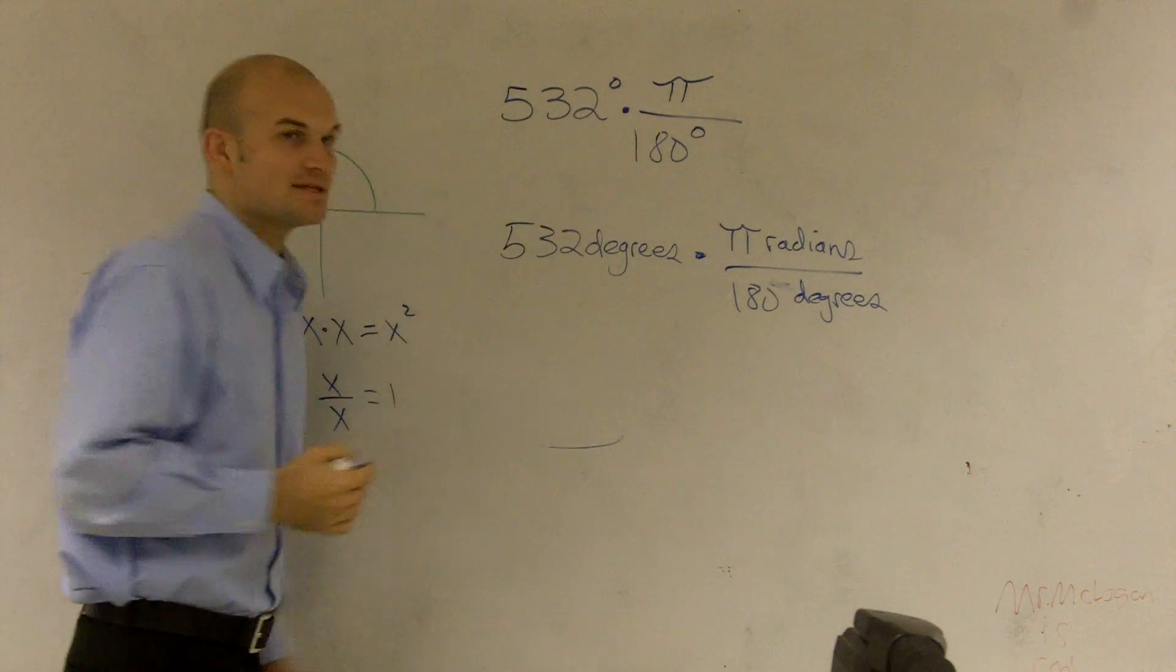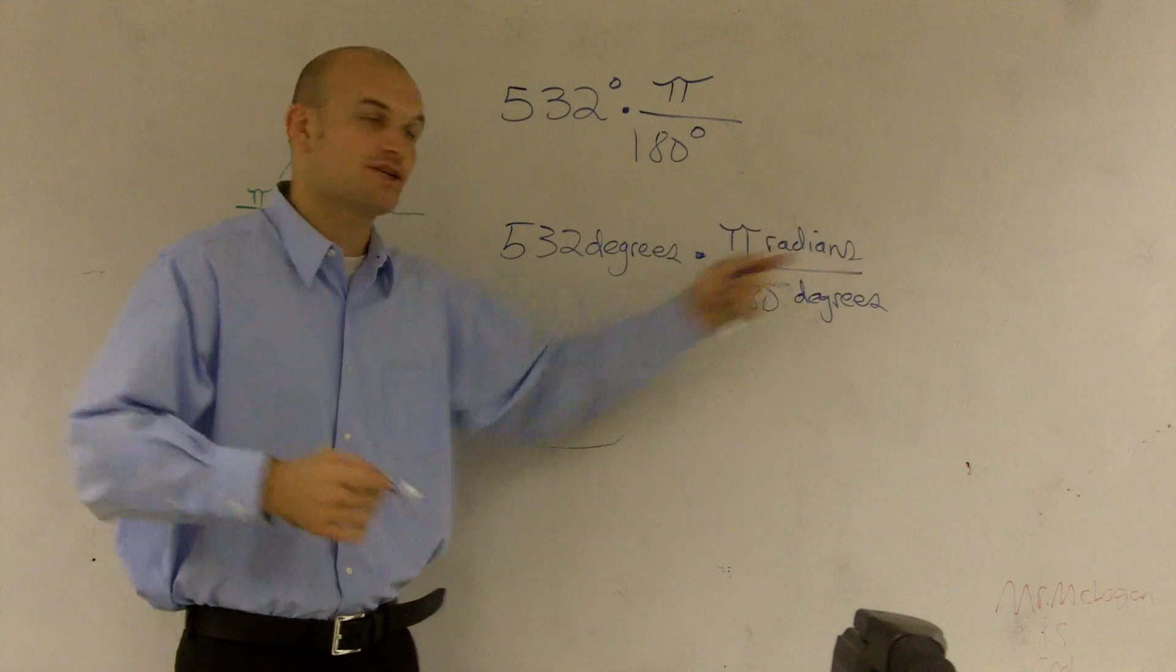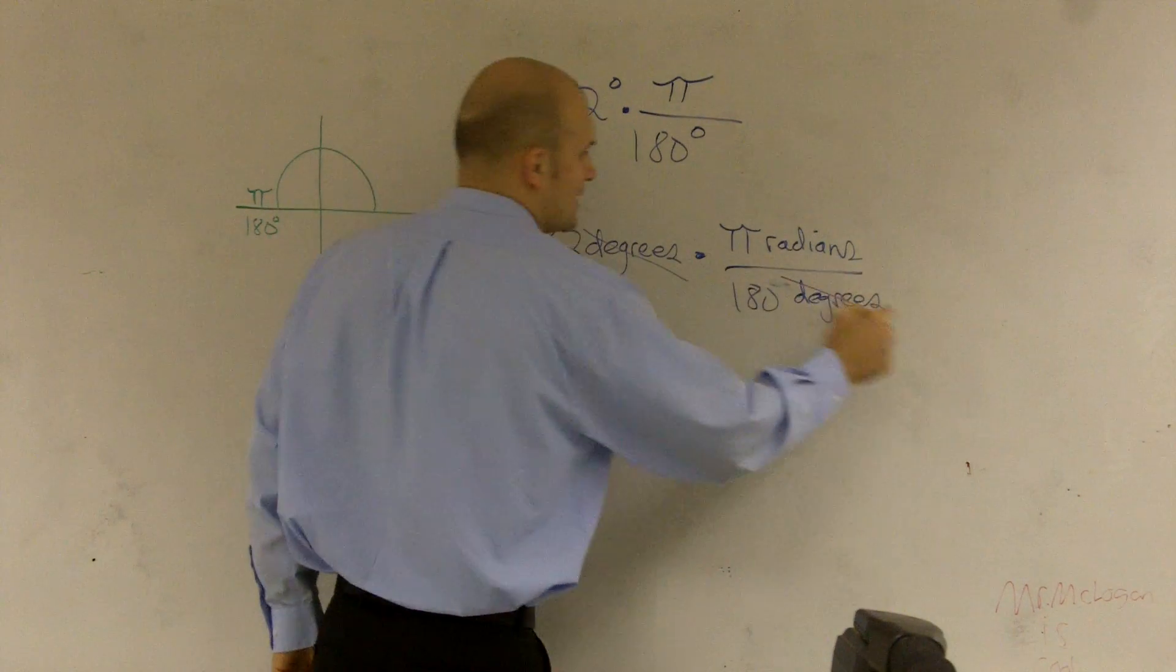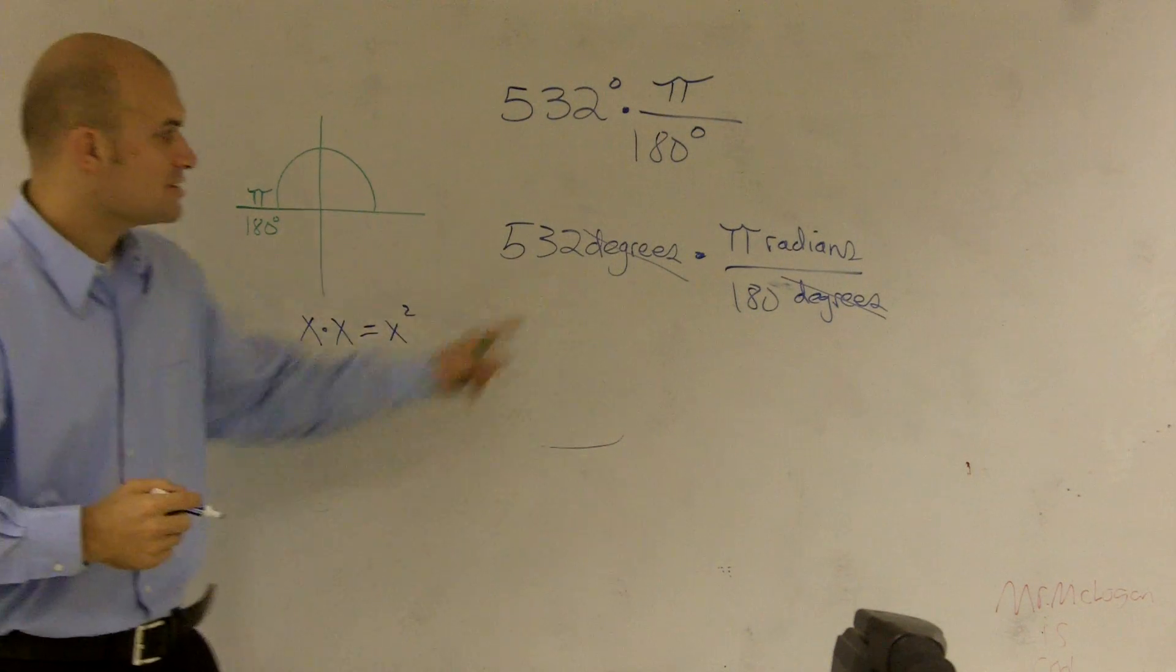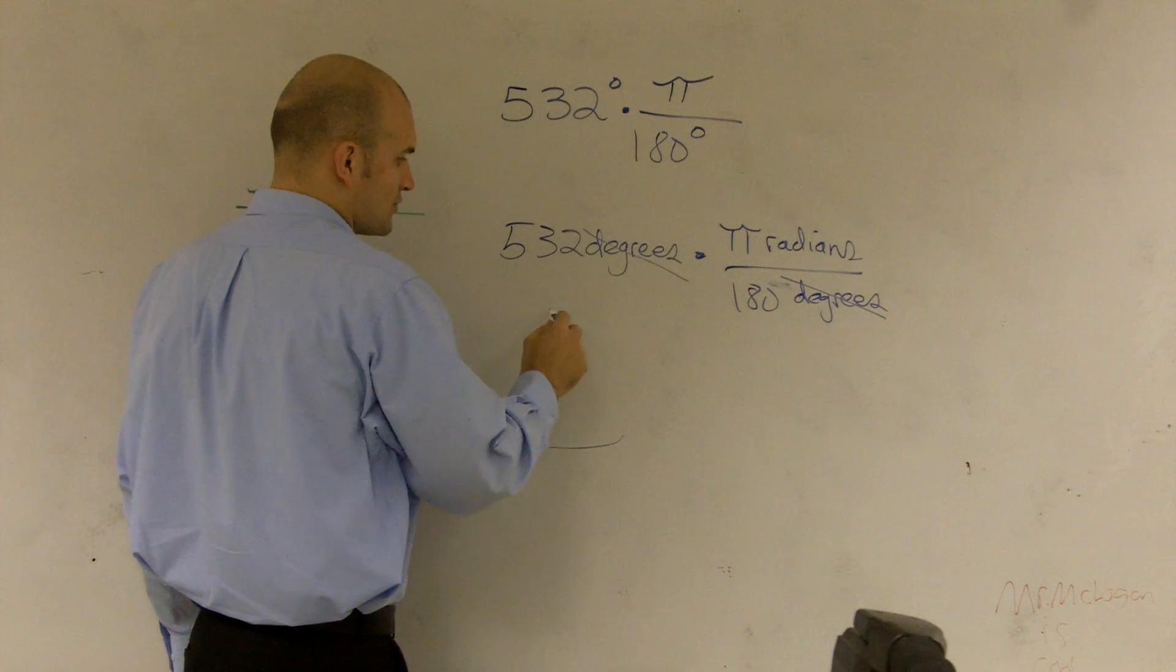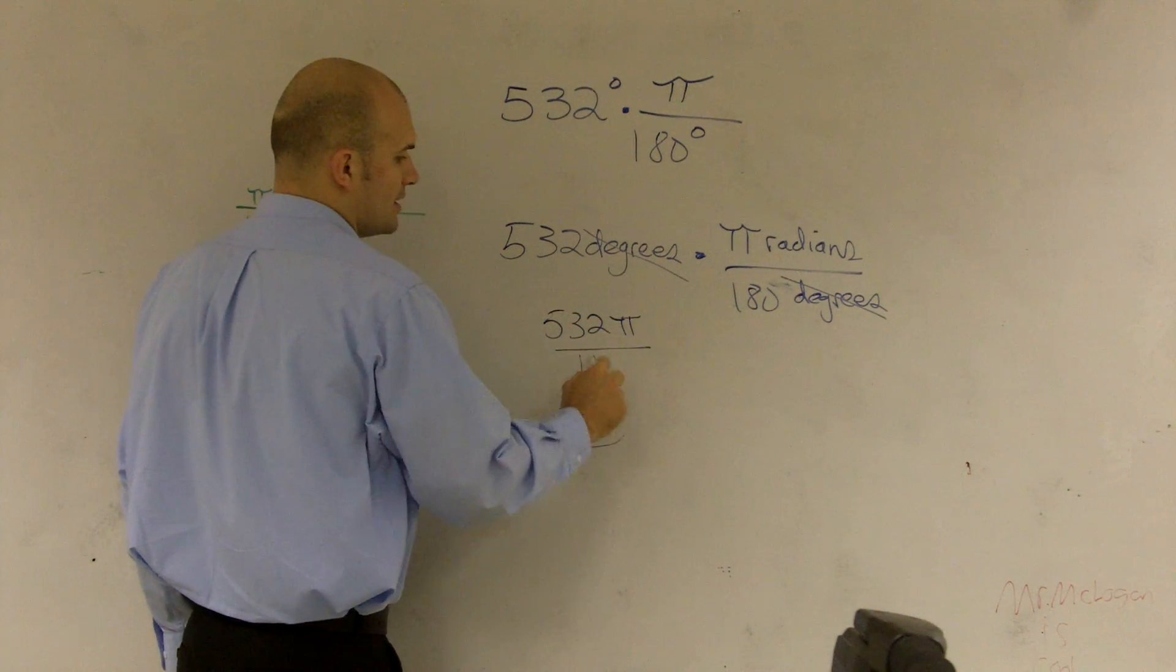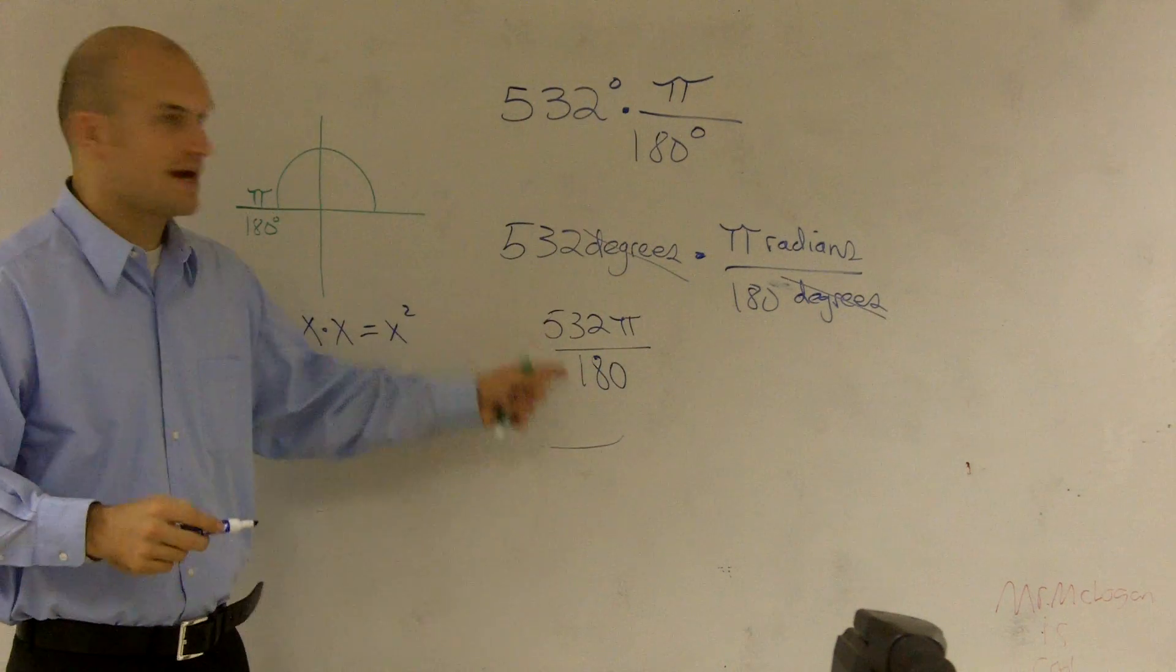So what happens is I have a degree over a degree. I have a degree, I have a degree over a degree, which we like to say cancels them out, kind of similar to that, right? So what happened was we got rid of our degree term, and then we're just left with the radians, which I don't need to write out because we know we only use pi in radians, but therefore that's what I have that.